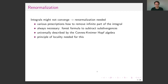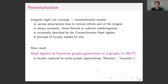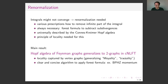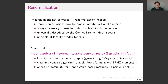The main result is that the Hopf algebra of Feynman graphs indeed generalizes to two-graphs for combinatorial non-local field theory. The notion of locality needed for local field theory generalizes here to the notion of vertex graphs, which in specific cases was also called moniality or tracialism. This gives a clear and concise algorithm to apply the forest formula and calculate renormalized amplitudes — for example, in the BPHZ momentum scheme — and it opens up the possibility for all kinds of Hopf algebra-based methods, particularly combinatorial Dyson-Schwinger equations.